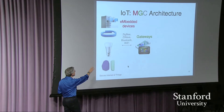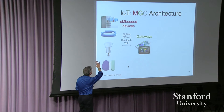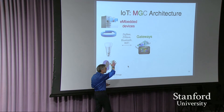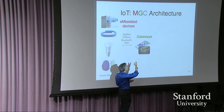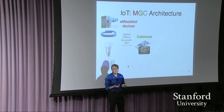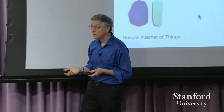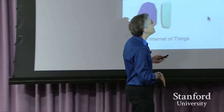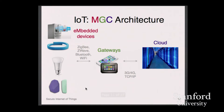That typically communicates — because it has low energy — via constrained wireless. It communicates to a local device, generally a gateway device, most often today a cell phone. That's the beacon that the little device talks to, and of course then that gateway goes to C, and the C is the cloud.